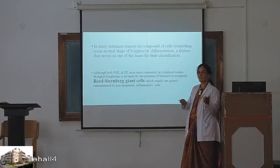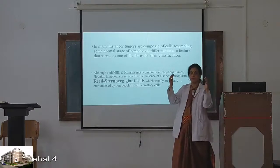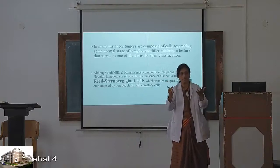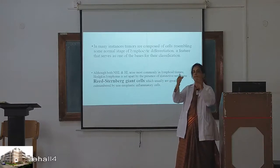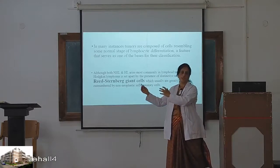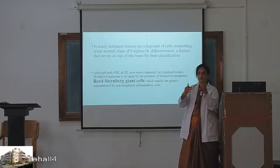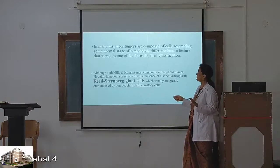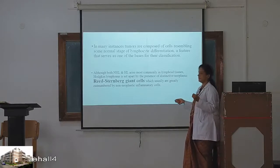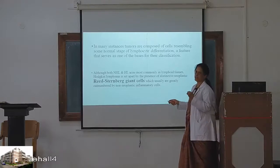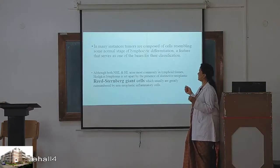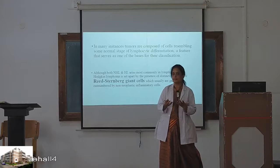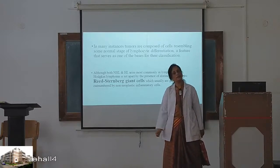In all these diseases, how do they develop? There is something called a lymphoblast — that is the immature or precursor cell. A lymphoblast develops into a mature cell; when it becomes mature, we call it a lymphocyte. In many instances, tumors are composed of cells that resemble some normal stage of lymphocytic differentiation. Based on what type of cells are present and what markers they contain, they are all classified.